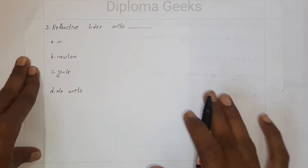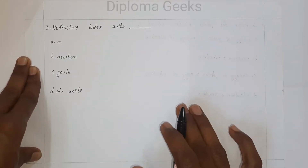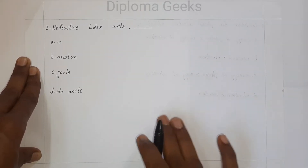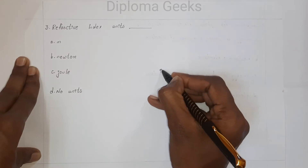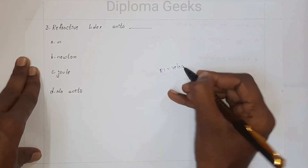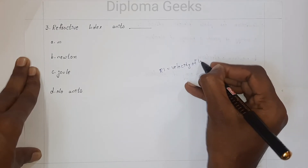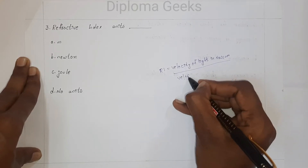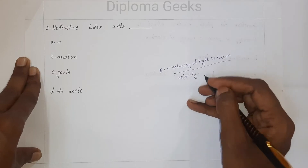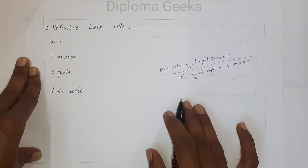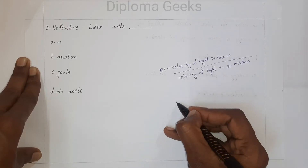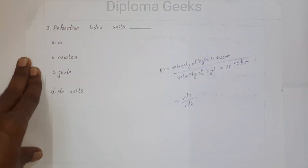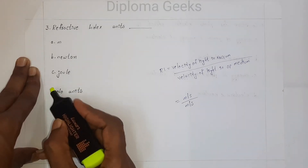Question number three: refractive index units — option A: meters, option B: newtons, option C: joules, option D: no units. Refractive index is the ratio of the velocity of light in vacuum to the velocity of light in a specified medium. Both values are in meters per second, so they cancel out, and the refractive index has no units. The answer is option D: no units.